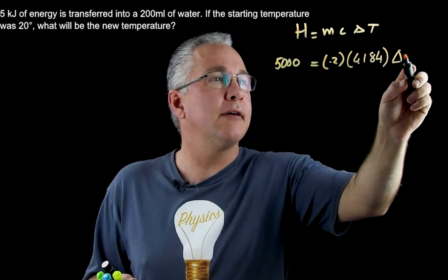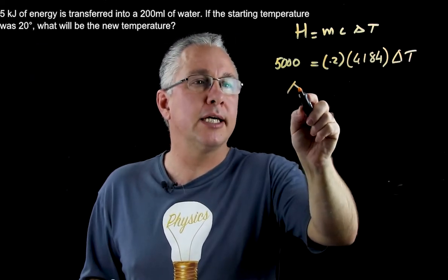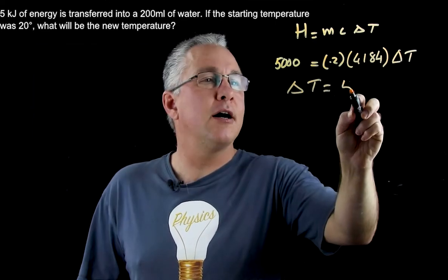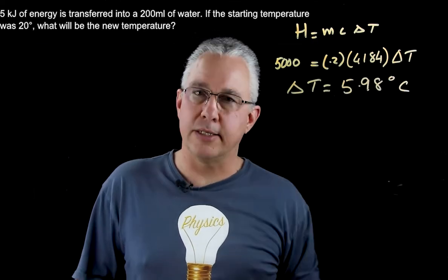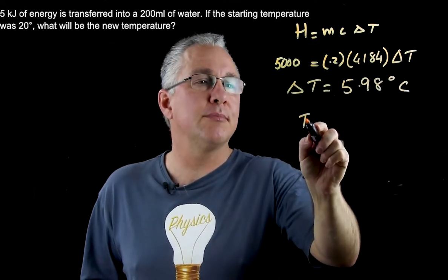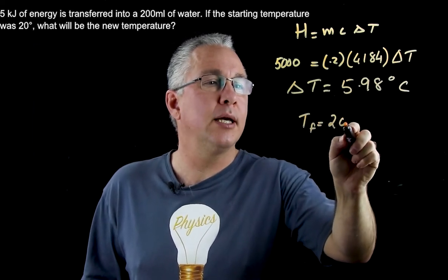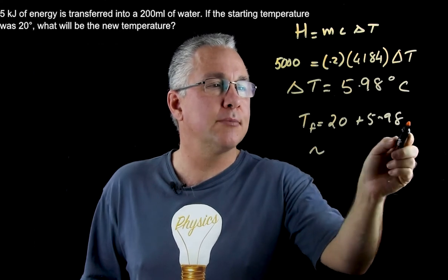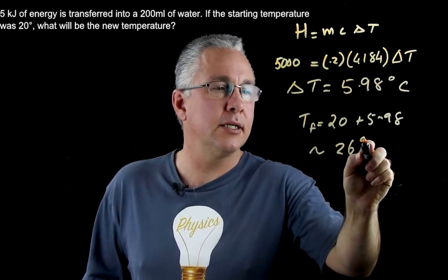Then we have our delta T at the end. If I rearrange this, I get delta T is equal to 5.98 degrees Celsius. Since my starting temperature was 20, my final temperature therefore will be equal to 20 plus 5.98, and of course that approximates to around 26 degrees Celsius.